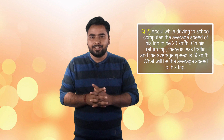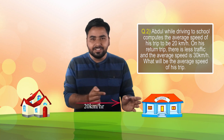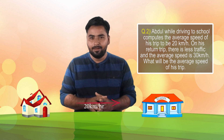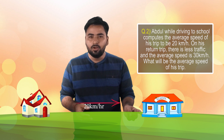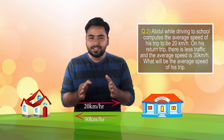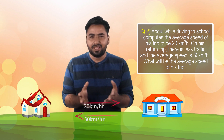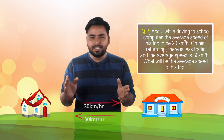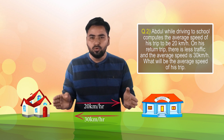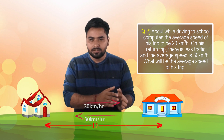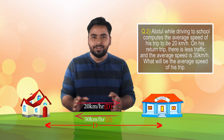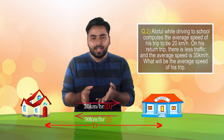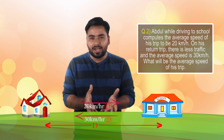In this question, going from home to school the speed is 20 km per hour, and returning from school the speed is 30 km per hour. We need to find the average speed. So let the distance between home and school be d.